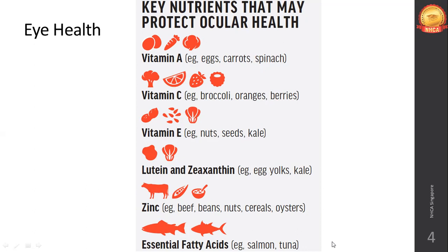Zinc also plays an important role in bringing vitamin A from the liver to the retina, for the transport of vitamin A from the liver to the retina, and to produce melanin that will protect your eye. Food sources rich in zinc include red meat, seafood, poultry, pork, oysters, eggs, nuts, and for vegans — tofu, baked beans, and wheat germ. All pulses and legumes are by default good sources of zinc.